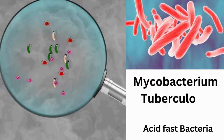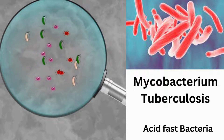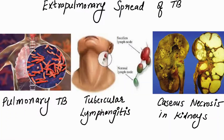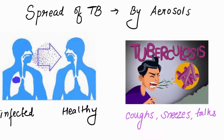TB is a bacterial infection caused by Mycobacterium tuberculosis. Primarily it affects the lungs, but it can also impact other parts like lymph nodes, kidneys, liver, and brain. TB is an airborne disease, meaning it spreads through the air. Whenever an infected person coughs, sneezes, or talks, droplets containing bacteria go into the air.